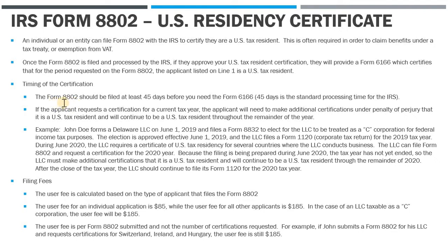The 8802 should be filed at least 45 days before you need the certification form, because of the standard processing time. If you need something next week it's going to be tough. In my experience, you need to anticipate at least 45 to almost 60 days to give the IRS time to receive the 8802, process it, and then send out the Form 6166 in the mail.